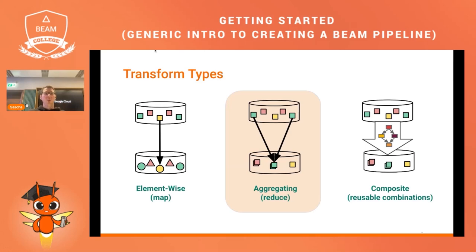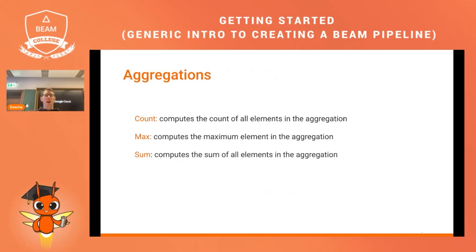The next transform type is aggregation transforms. These are a type of PTransform that combines multiple elements in a PCollection into a single value — for example, counting the number of elements in a dataset, or calculating a mean, median, or any other statistical measure.